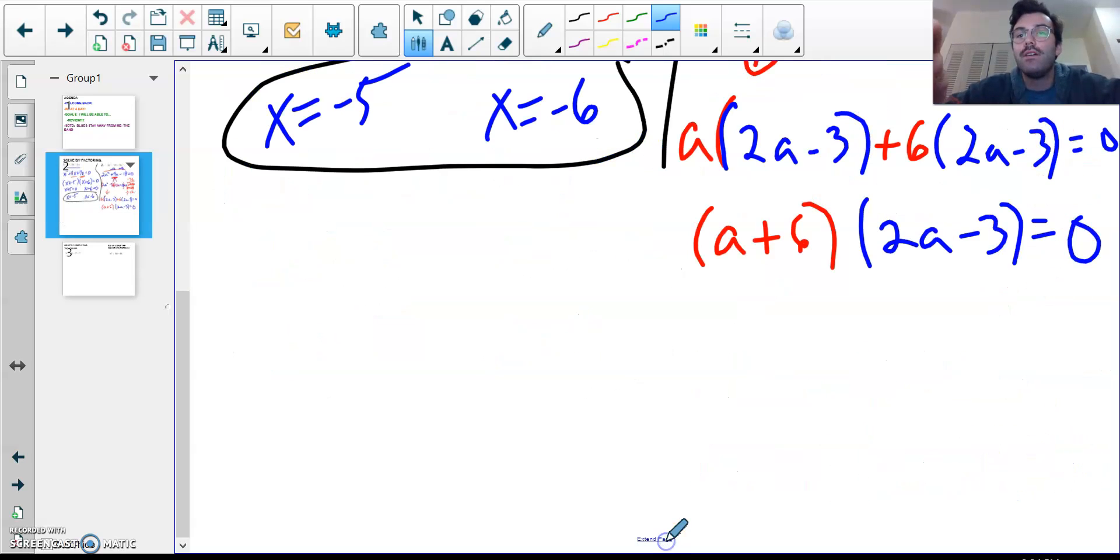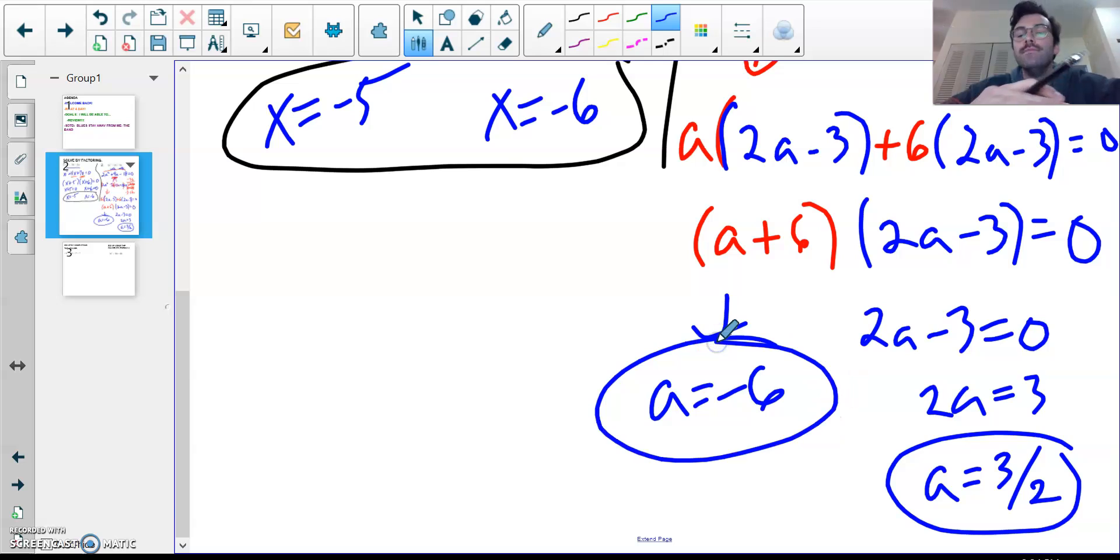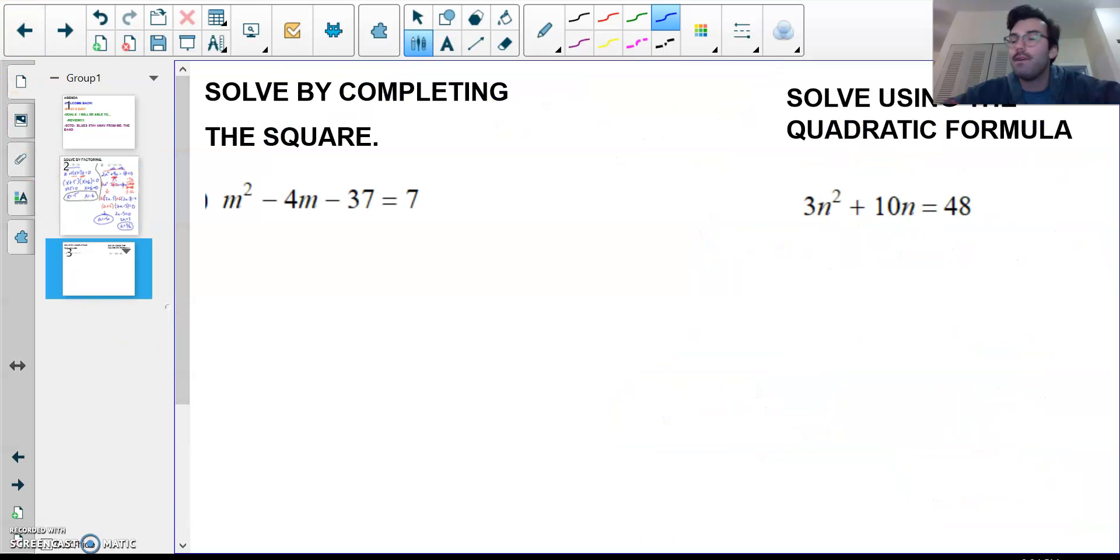So, our two factors are a plus 6 and 2a minus 3. Again, that's equal to 0. I have to solve. This, I should get a equals negative 6. This one, some people may struggle to do this in their head. So, I'll write out the steps. 2a equals 3. a equals 3 over 2. Here we go. All right. Two more. I'm going to pause for a second here. All right. My phone's going off here. Not really. I just need to pause. And we're back.